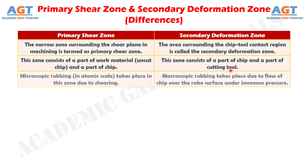Number 3: Microscopic rubbing, in atomic scale, takes place in the primary shear zone due to shearing, whereas in the secondary deformation zone, macroscopic rubbing takes place due to flow of chip over the rake surface under immense pressure.